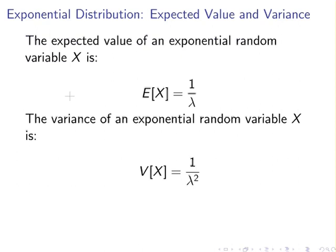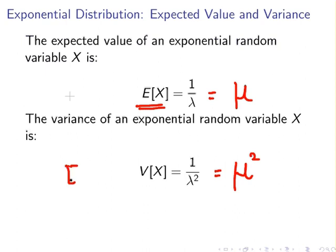Two important results: the expected value of the random variable X is E[X] = 1 over lambda. The variance of an exponential random variable is V[X] = 1 over lambda squared, which can also be written as mu squared — the expected value of X, squared. This is quite easy to remember.